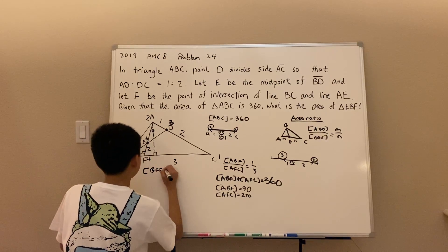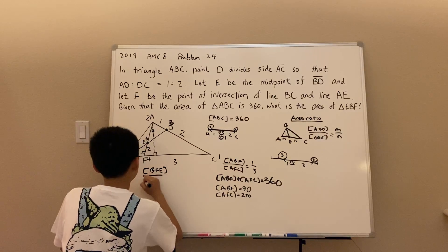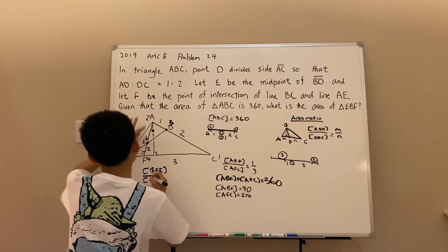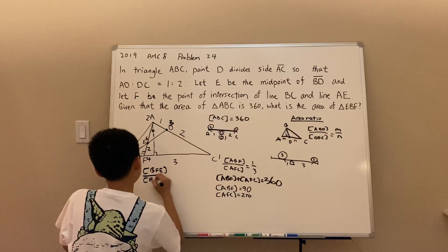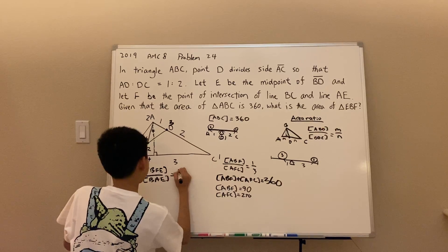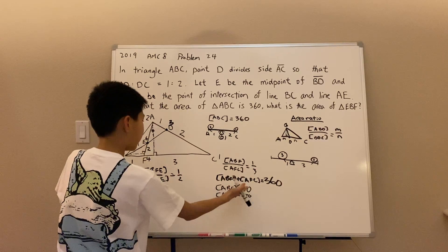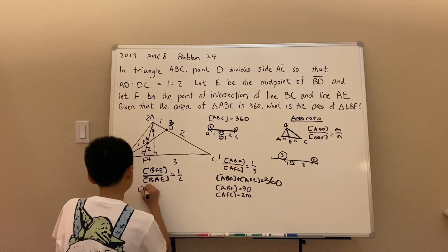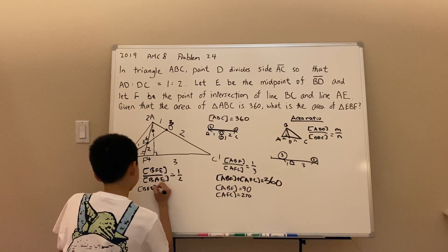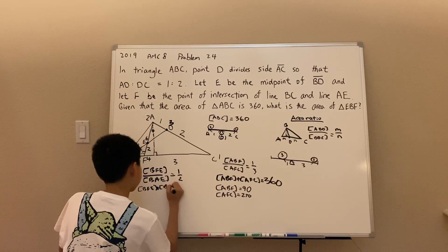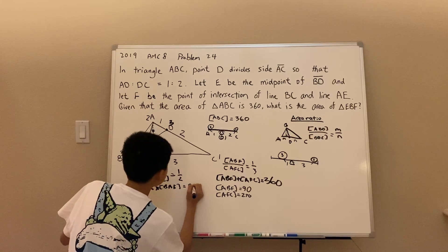The ratio of BEF over the area of BAE is equal to 1 to 2. And we have that the sum equals 90.